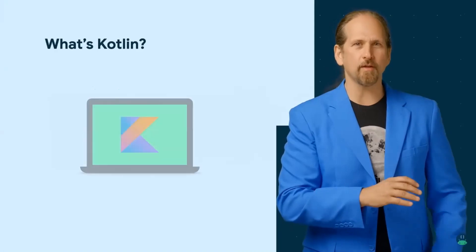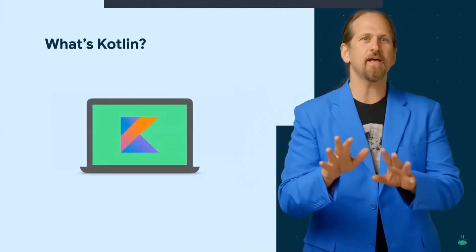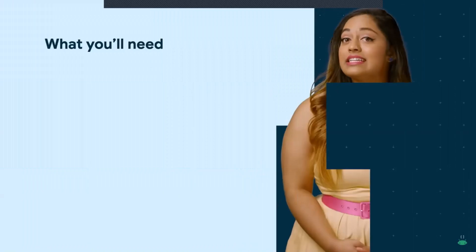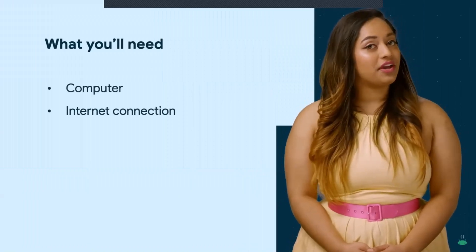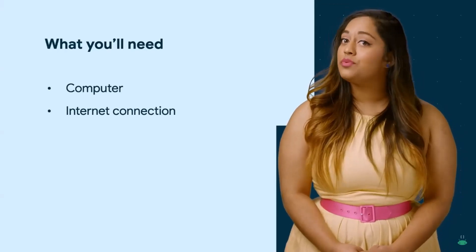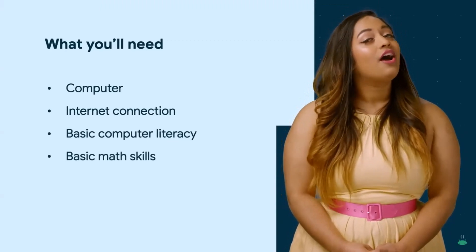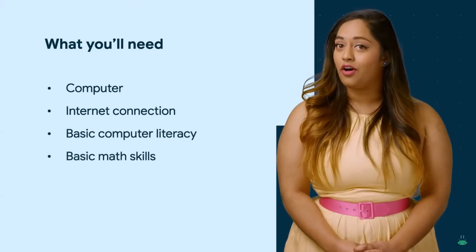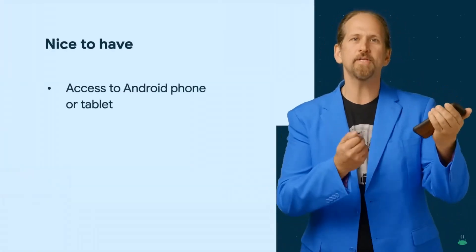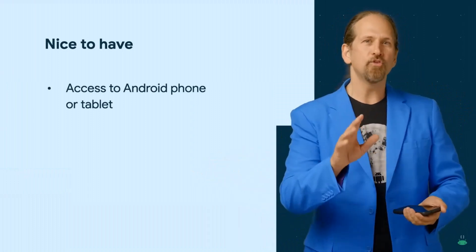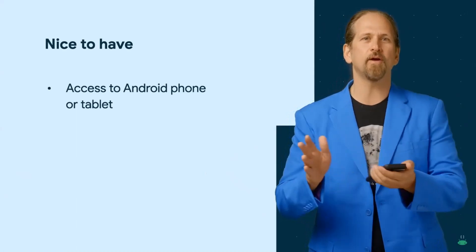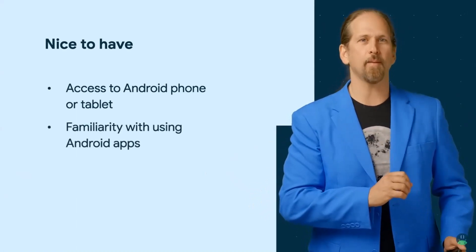At its core, a programming language is used to tell a computer what you want it to do. It's similar to learning a foreign language, but instead of speaking to people from another country, we're communicating with the computer. To get started, you need a computer and an internet connection so you can download Android Studio. You don't need any prior programming experience, but basic computer and math skills are required. It's also helpful to have an Android device — phone or tablet — to test your app on. If you don't have one, that's okay. We'll show you how to simulate an Android device with an emulator. The most important requirement is your motivation and willingness to learn.